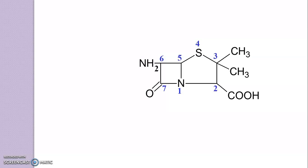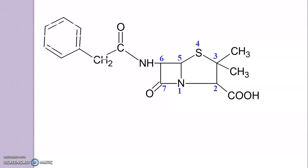Now, from this amino group, you have to replace one hydrogen and attach a C=O group. And to this C=O, you have to attach a benzyl group — that is, a benzyl ring with CH₂. So, this formed structure is nothing but benzyl penicillin. That is, Penicillin G.